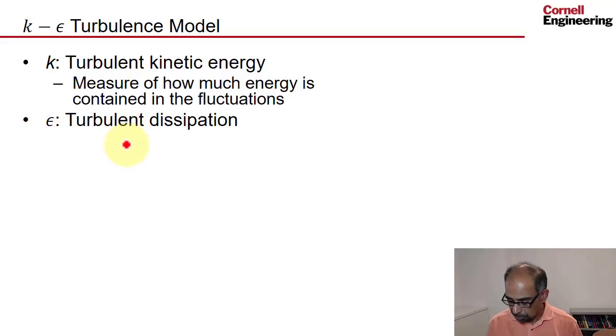Epsilon is turbulent dissipation. It's a measure of the rate at which the turbulent kinetic energy is dissipated. So if I have a box of fluid and I shake it vigorously and I set up turbulence in it, the faster I shake it and the more vigorously I shake it, the greater are going to be the fluctuations, the greater is going to be the turbulent kinetic energy. Now when I stop shaking it, the fluctuations are going to die down. More the turbulent dissipation, the faster it will die down.